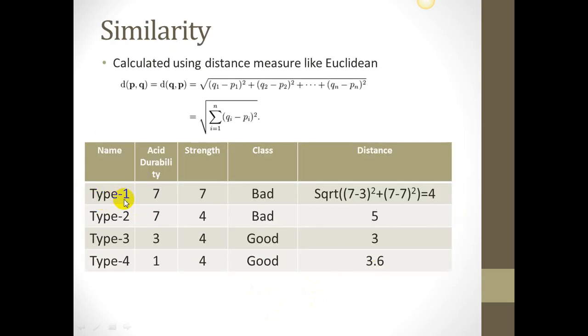So in type 1, the acid durability is 7 and strength is also 7, so the distance from our test query becomes square root of (7 minus 3)² plus (7 minus 7)², which equals 4. Similarly, we find out the distance of the new test query tissue with tissues of type 2, and that can be calculated as square root of (7 minus 3)² plus (7 minus 4)², and that comes out to be 5.